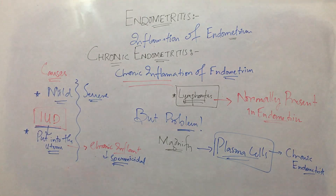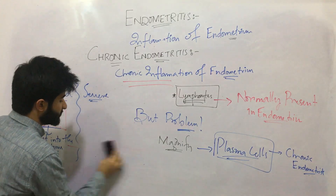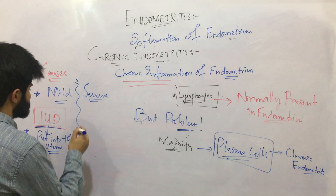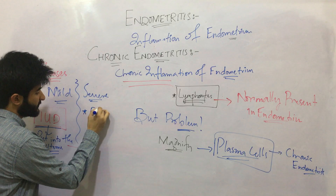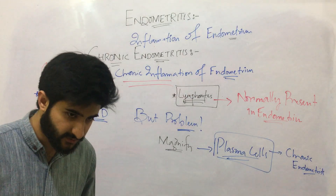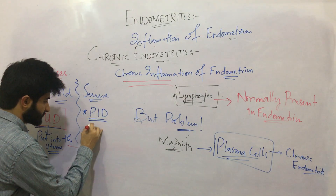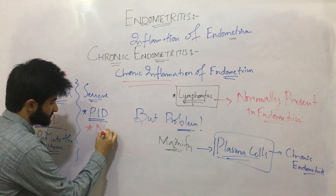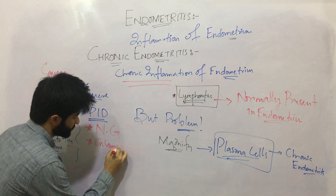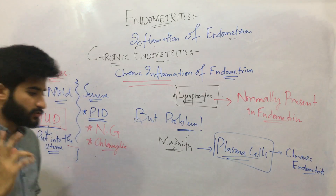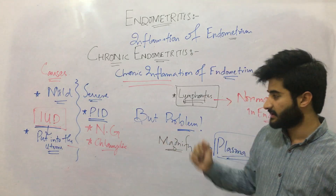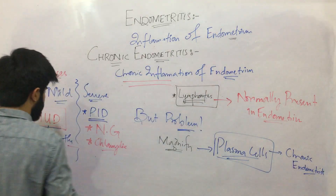But if there is severe endometritis — if we are seeing a lot of lymphocytes and a lot of plasma cells — then the cause can be Pelvic Inflammatory Disease. Pelvic Inflammatory Disease is caused by Neisseria gonorrhoeae and Chlamydia trachomatis. So the two most common agents that cause Pelvic Inflammatory Disease are Neisseria gonorrhoeae and Chlamydia trachomatis.